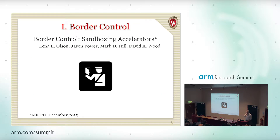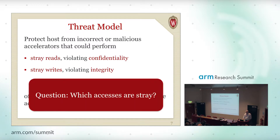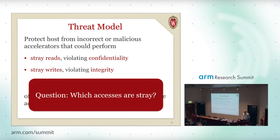The first one, border control, is really talking about sandboxing an accelerator. This work was presented at Micro a couple of years ago and was co-authored by Jason Lowe-Power. The threat model here is to protect the host from an incorrect or malicious accelerator that could perform stray reads, which have the potential to violate confidentiality, or stray writes, which can violate integrity. In particular, it's a threat for both processes that run on the accelerator or not on the accelerator, including the operating system itself.